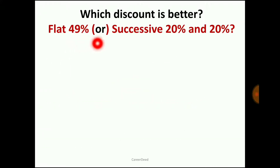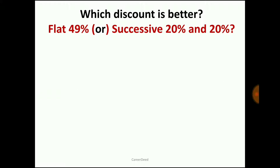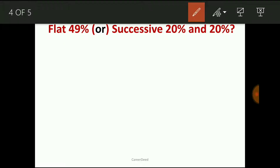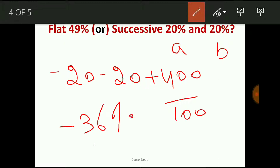Now let us enter into an example: which discount is better — flat 49% or successive 20% and 20%? Assume the product price is 100 rupees. Flat 49% means the total discount is 49 rupees, so you pay only 51 rupees. For successive 20% and 20%, applying the formula: (−20) + (−20) + (−20 × −20)/100 = −20 − 20 + 400/100, which gives −36. So the actual successive discount is only 36%.